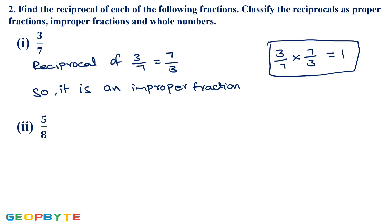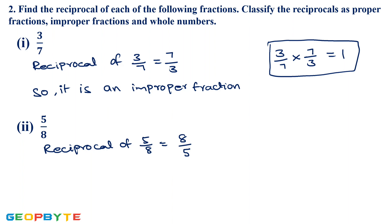Next: 5/8. Reciprocal of 5/8 is 8/5. In this case also the numerator is greater than the denominator, so it is an improper fraction.